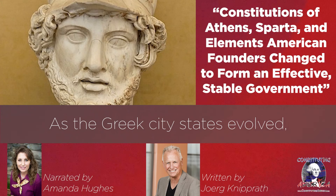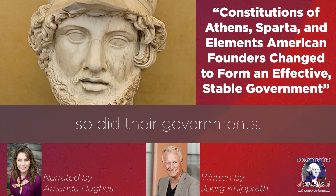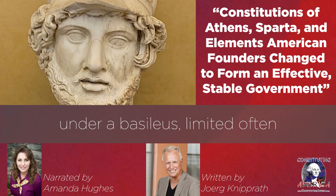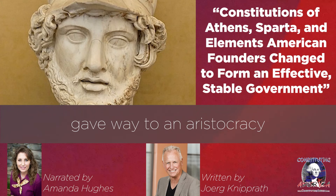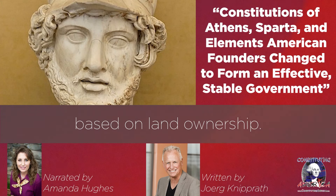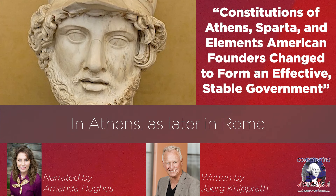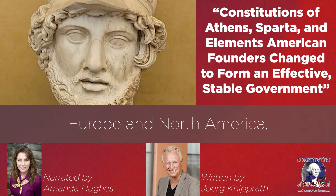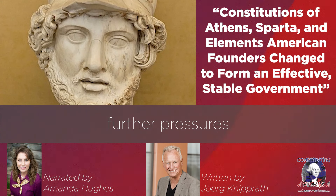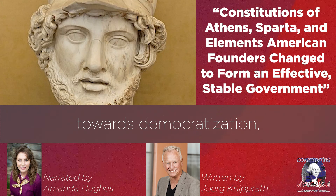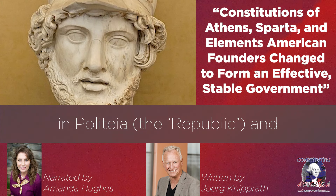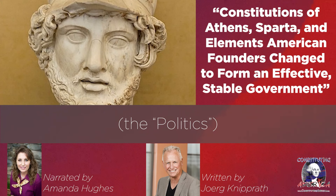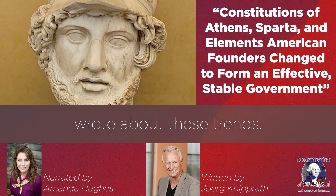As the Greek city-states evolved, so did their governments. The chieftain or kingly form of government under a basileus, limited often by powerful individual noble warriors prominent in Homer's Iliad, typically gave way to an aristocracy based on land ownership. In Athens, as later in Rome and in the history of Europe and North America, there were further pressures towards democratization influenced by the growth of commerce and sea trade. Both Plato in Politeia (the Republic) and Aristotle in Politica (the Politics) wrote about these trends. Neither was a fan. Plato especially saw these developments as evidence of degeneration.